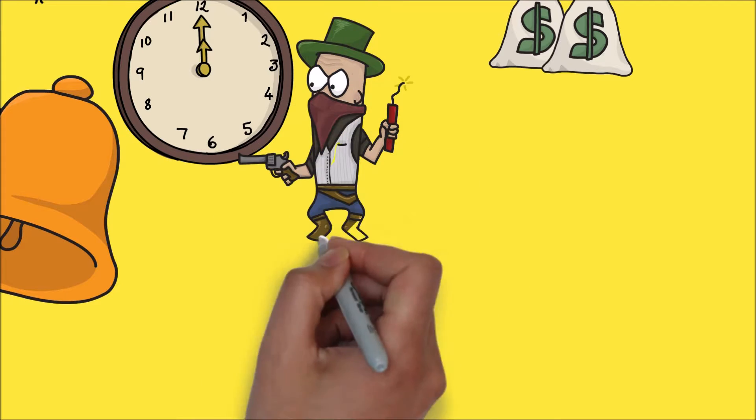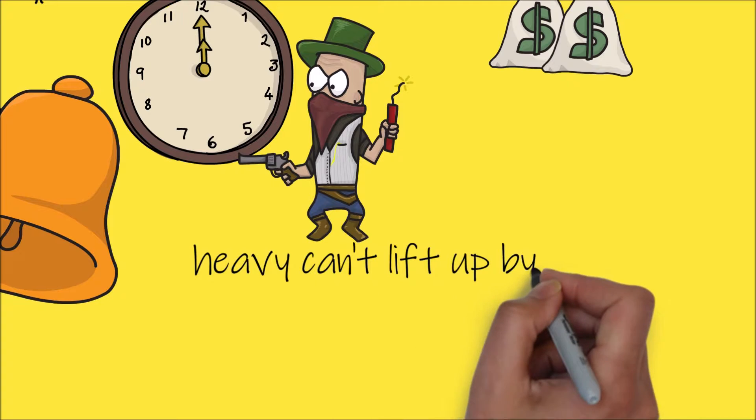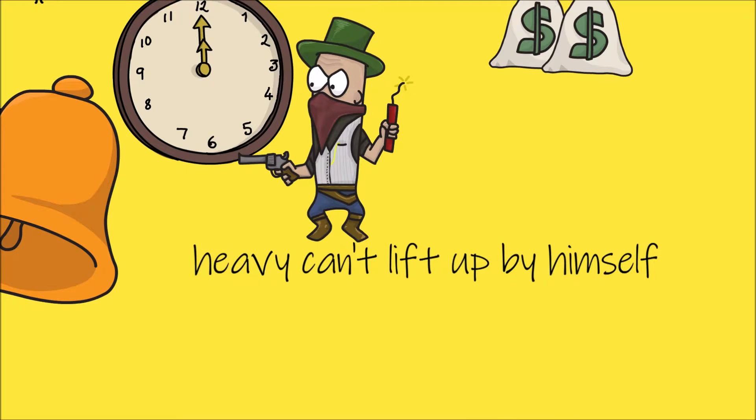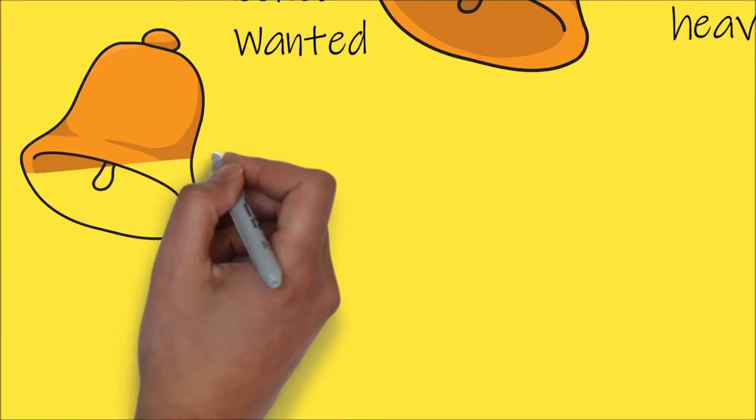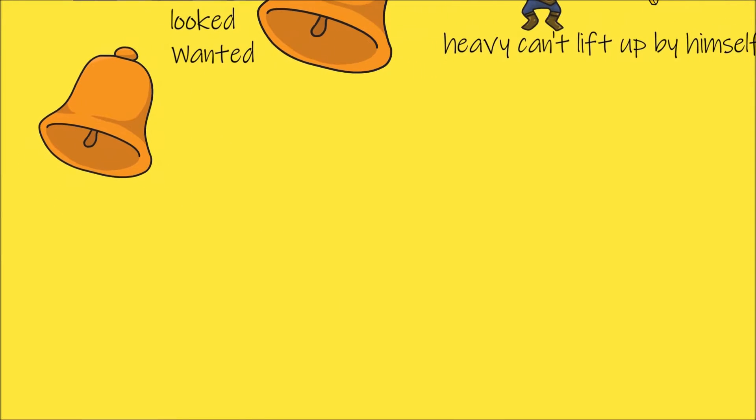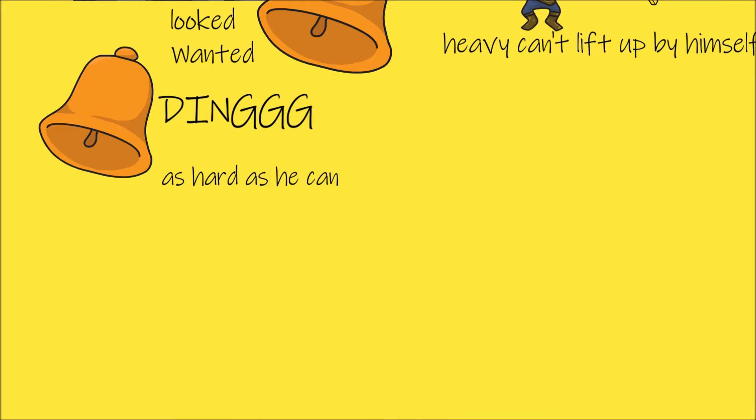The robber kept thinking about the bell and how heavy it was. It was so heavy that he couldn't lift it up by himself. And luckily he brought a hammer. And his idea was to hammer the bell as hard as he can. And he did that.